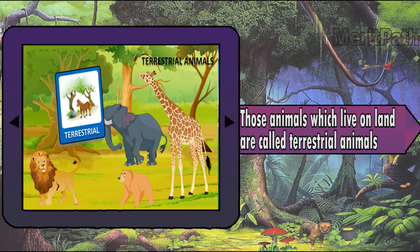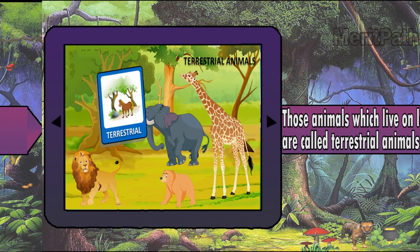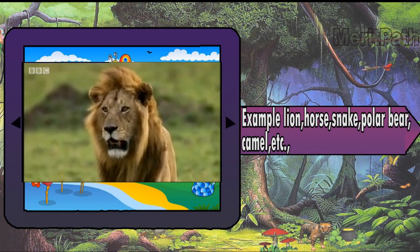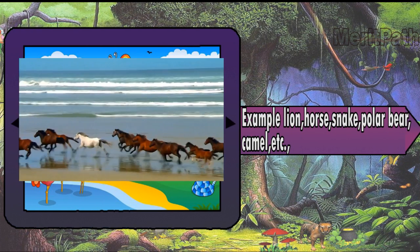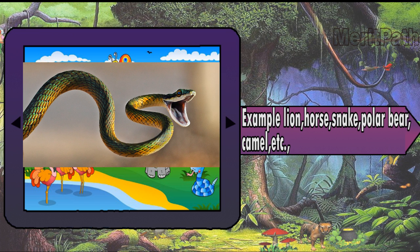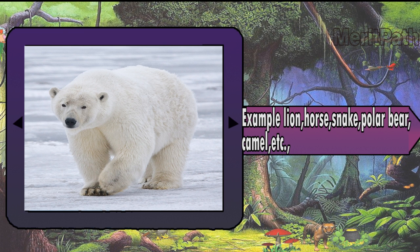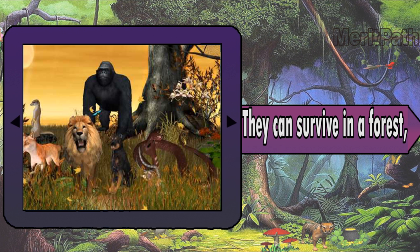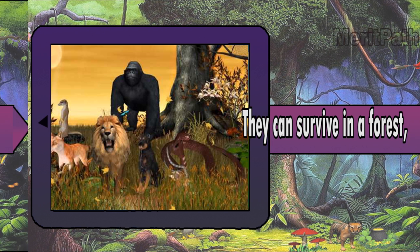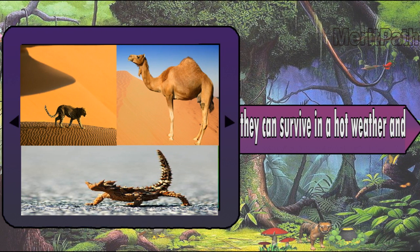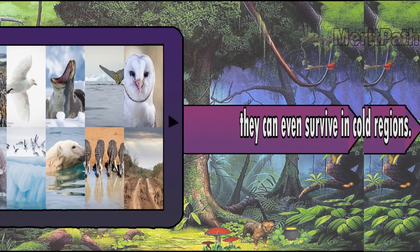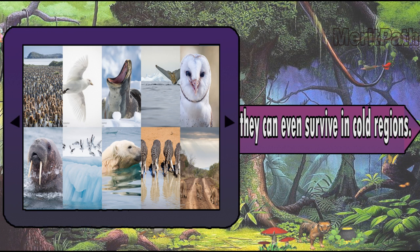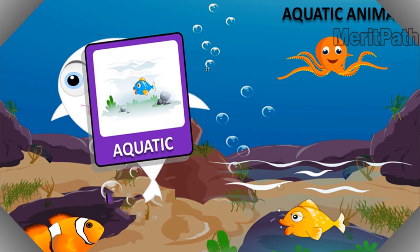Those animals which live on land are called terrestrial animals. Examples: lion, horse, snake, polar bear, camel, etc. They can survive in a forest, in hot weather, and even in cold regions.